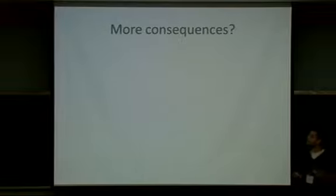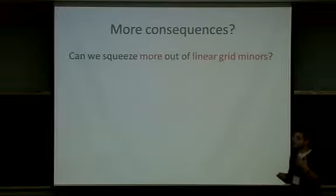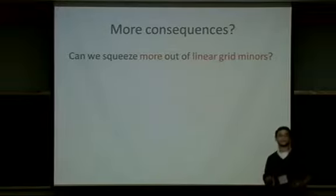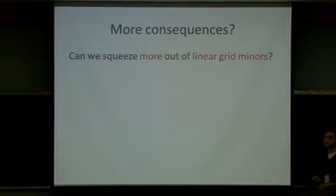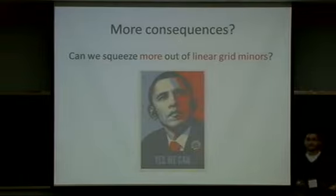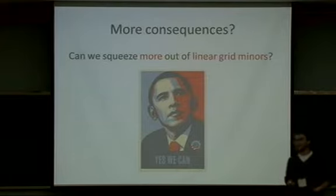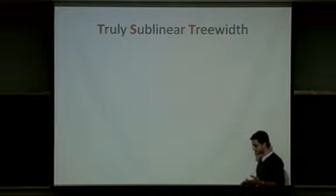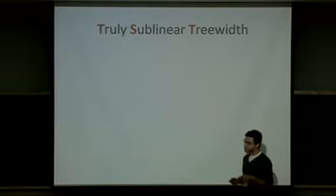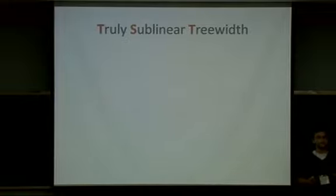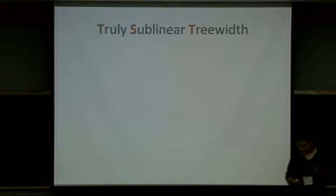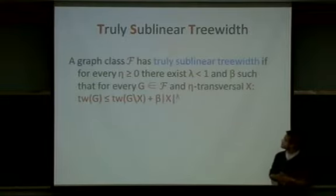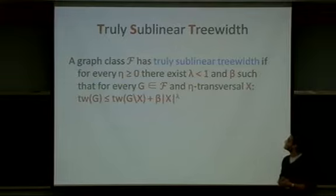The question is: is it possible to squeeze out something more from linear grid minors and just linear grid minors? The answer is yes. The first thing we're going to talk about is truly sublinear tree width, which is somehow a combinatorial consequence of linear grid minors, but also has nice algorithmic applications. Without further ado, let's look at the definition.